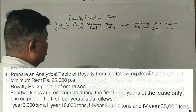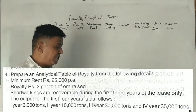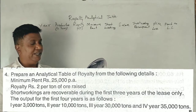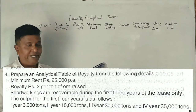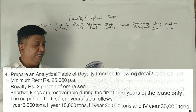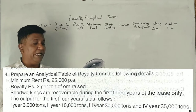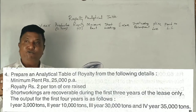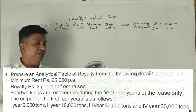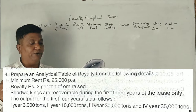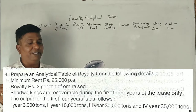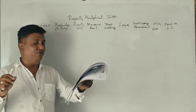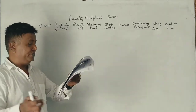Students, in 2015, one question is: prepare an article table of royalty from the following details. Minimum rent ₹25,000 per annum, royalty rupees 2.10 per ton of output. Short workings are recoverable during the first three years of the lease only. The output for the first four years is as follows.